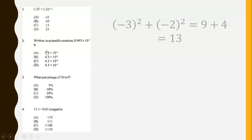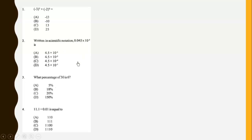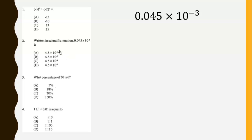The next question is writing a number in scientific notation. Scientific notation means you write a number such that the first non-zero digit is greater than or equal to 1 but less than 10.